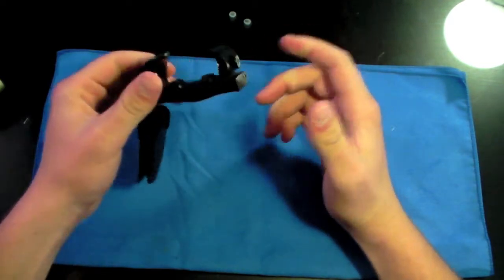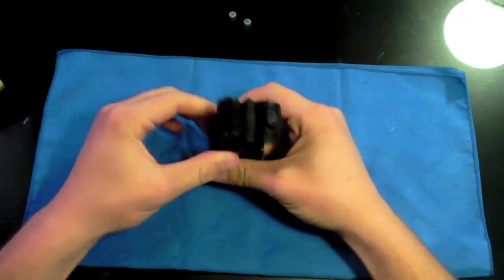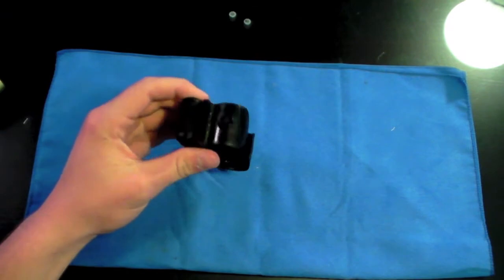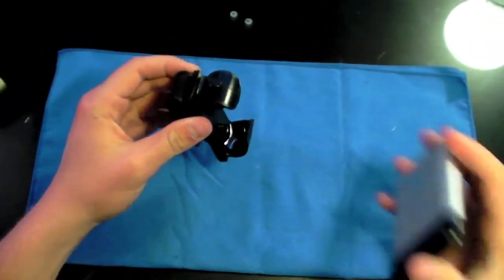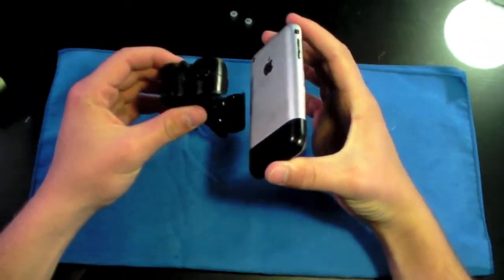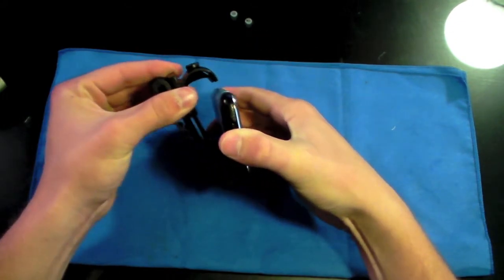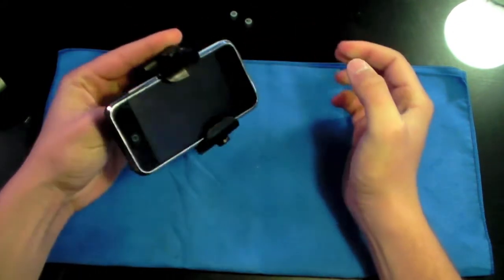Now basically how this works is you clip it onto your belt and you take your cell phone. You drop it into the bottom like this. You push down, it opens up and then it locks right onto your phone.